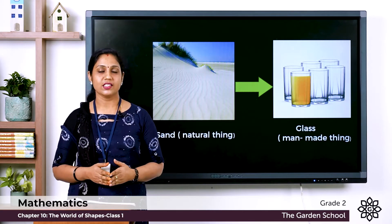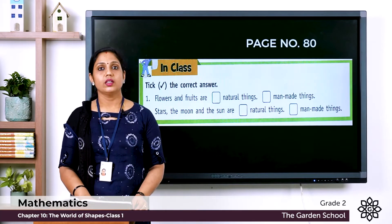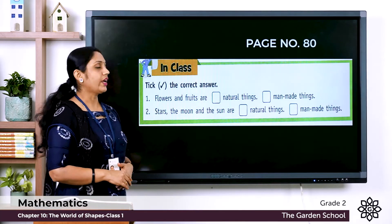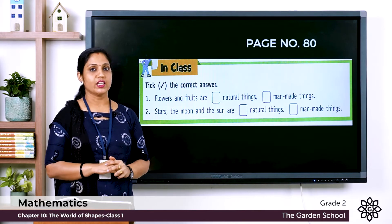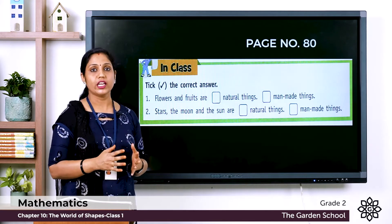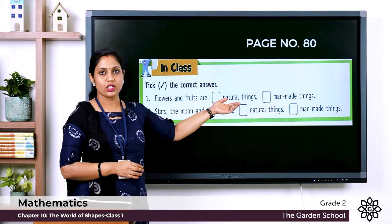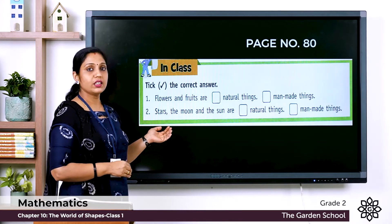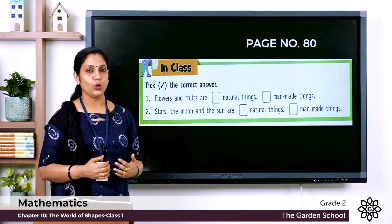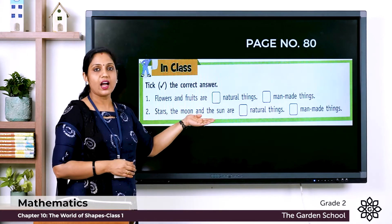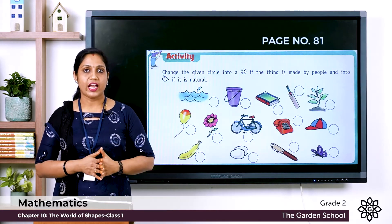Now let's move on to exercises. Open your textbook to page number 80. Tick the correct answer: flowers and fruits — are they natural things or man-made things? You get flowers and fruits from plants or trees, which are natural, so flowers and fruits are natural things. Second question: stars, the moon, and the sun — these are not made by man, so they are natural things.